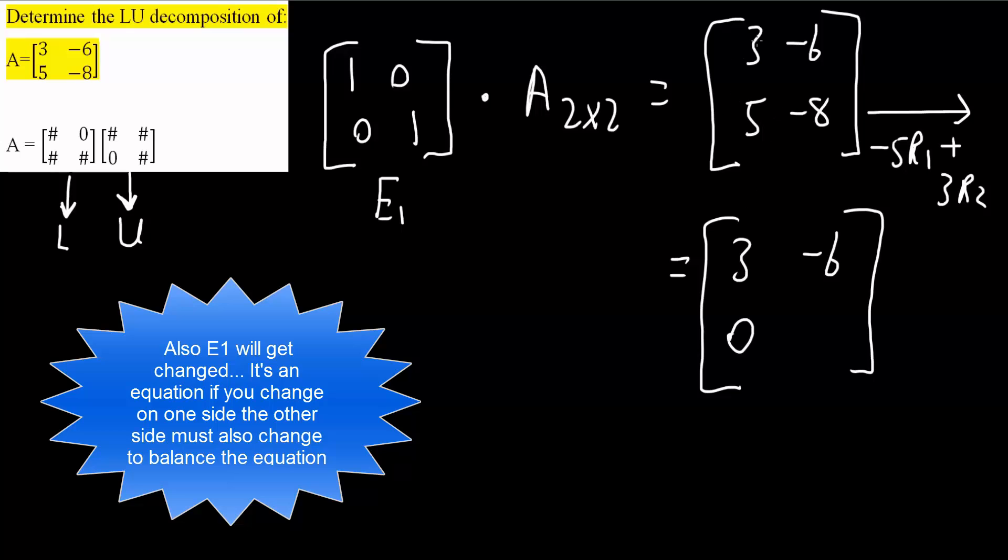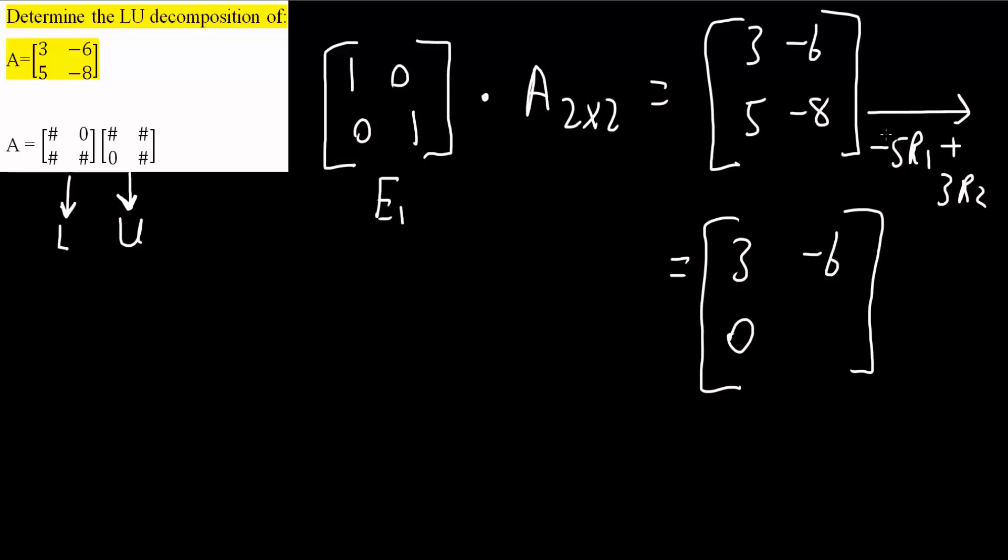So, this is what I would get. 3 times -5 is -15, plus 3 times 5 is 15. So, -15 plus positive 15 would give us 0. And now, this is how -8 changes. -5 times -6 would give us 30, plus 3 times -8 is -24. So, 30 minus 24 would give us 6.